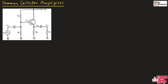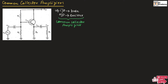In common collector amplifier, the input is applied to the base and output is taken at the emitter terminal. Such type of amplifier is known as common collector amplifier. This amplifier is also known as emitter follower amplifier.